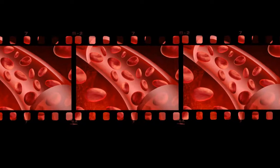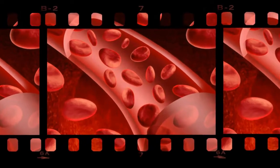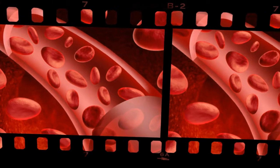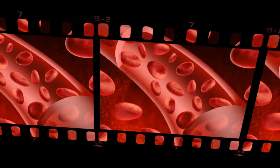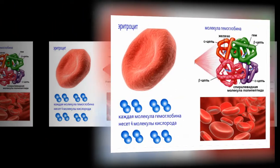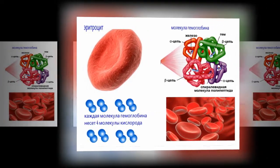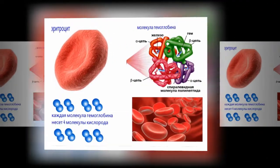Hemoglobin is the protein molecule in red blood cells that carries oxygen from the lungs to the body's tissues and returns carbon dioxide from the tissues back to the lungs. Hemoglobin is made up of four protein molecules.